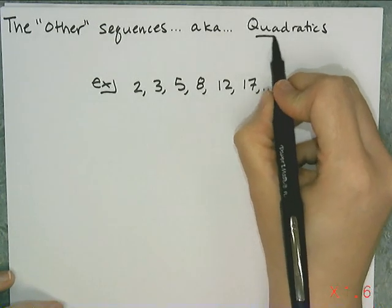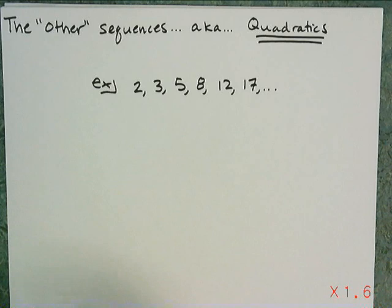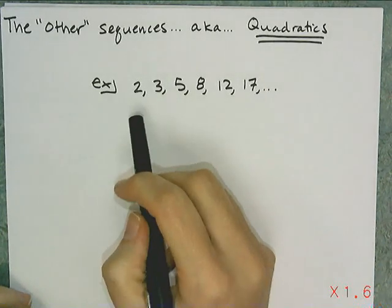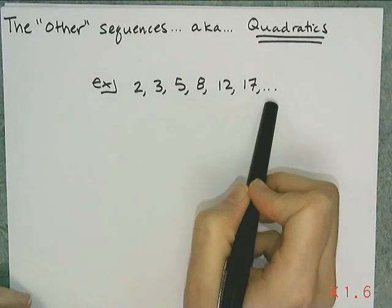And we're going to call them quadratics because you're going to see in a little bit that they're related to these things called quadratic functions. So I'm looking at the sequence 2, 3, 5, 8, 12, and 17.